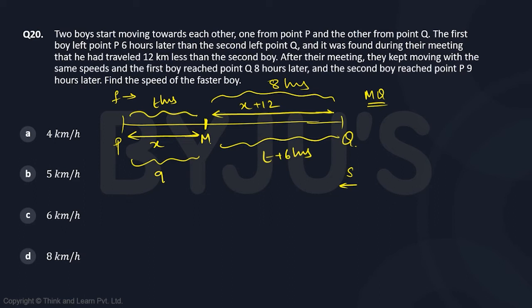In your MQ, ratio of time, time of first boy by time of second boy should be equal to inverse ratio of your speeds, speed of second boy by speed of first boy. What is this ratio? First boy's time is 8, second boy's time is T plus 6.